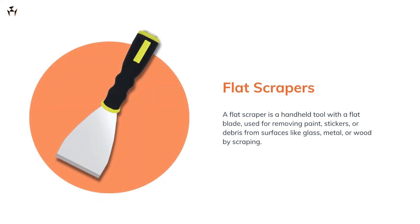The first one on the list is the flat scraper. A flat scraper is a tool you use to scrape on flat surfaces. Its sharp edge is curved outward, kind of like a round shape. They come in different lengths ranging from 100 mm to 300 mm. The cutting edge is created by grinding one side at an angle of 81 degrees.